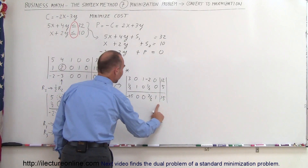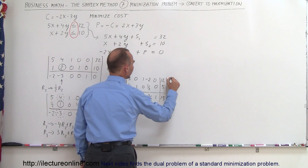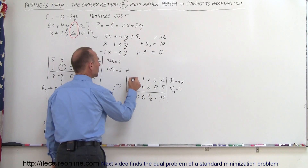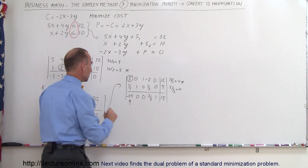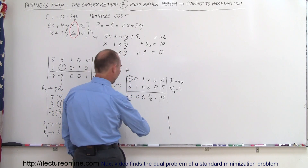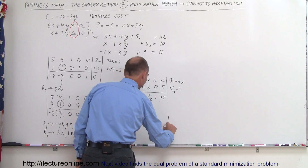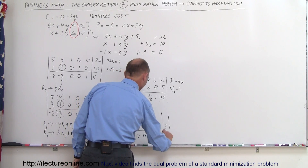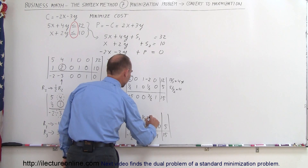We still have a negative number here, so we go up this column and look for the smallest ratio. 12 divided by 3 equals 4, and 5 divided by 1/2 equals 10. The smallest ratio is 4, so we're going to pivot around this number. We need to make it into a 1, which we do by dividing the entire first row by 3: R1 becomes 1/3 times R1. So row 1 becomes: 1, 0, 1/3, minus 2/3, 0, and 4. Row 2 stays: 1/2, 1, 0, 1/2, 0, and 5. Row 3 stays: minus 1/2, 0, 0, 3/2, 1, and 15.